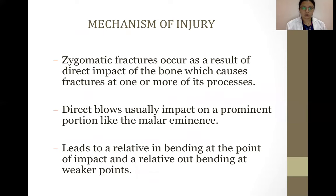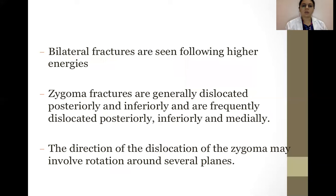Coming to the mechanism of injury: zygomatic fractures occur as a result of direct impact to the bone, causing fractures at one or more of its processes. Direct blows usually impact on a prominent portion like the malar prominence or malar eminence, leading to relative bending at the point of impact and relative outbending at weaker points. Bilateral fractures are seen following higher energies. Zygoma fractures are generally dislocated posteriorly and inferiorly, and frequently posteriorly, inferiorly and medially. The direction of dislocation may involve rotation around several planes.